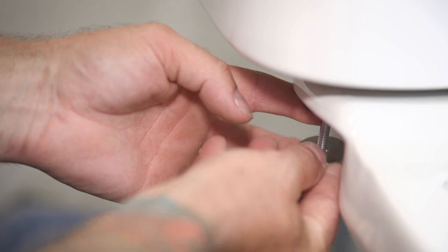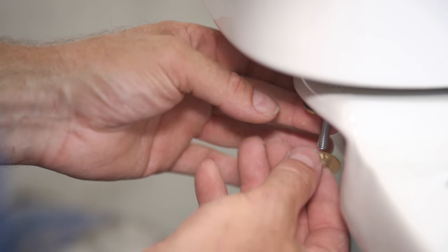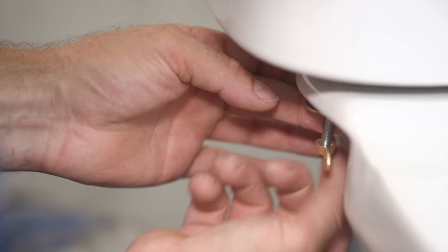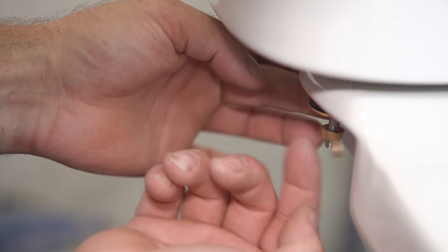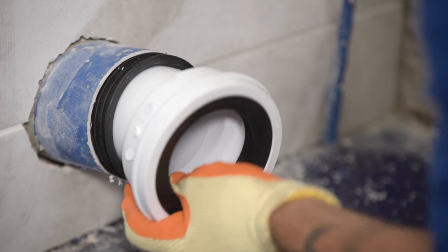Secure the cistern to the pan by hand tightening the supplied washers and wing nuts onto the bolts. Then insert the pan connector, making sure the fit is snug.